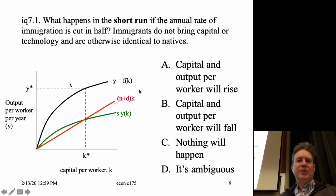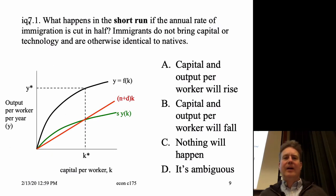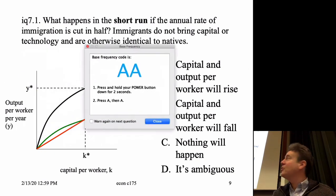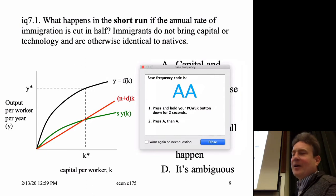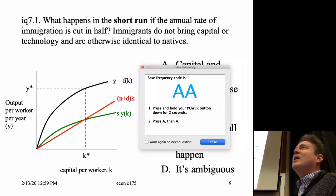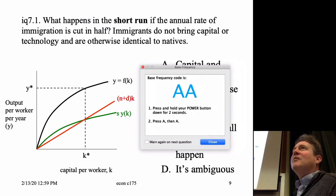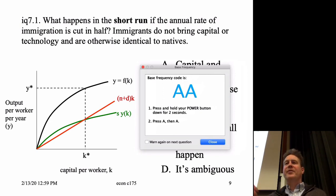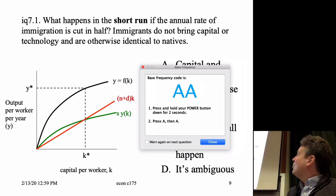Let's do an iClicker question up front. If you're having a problem with your iClicker, press and hold the power button down for two seconds and press A, then A. That should sync you up with this base station.